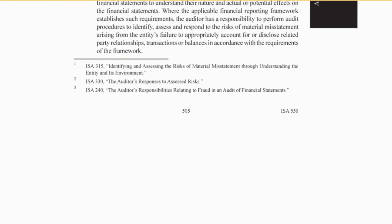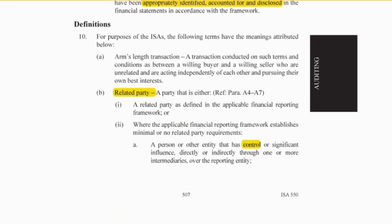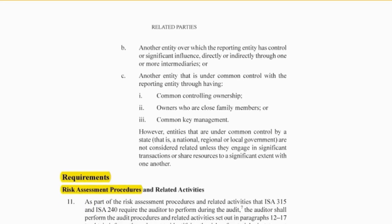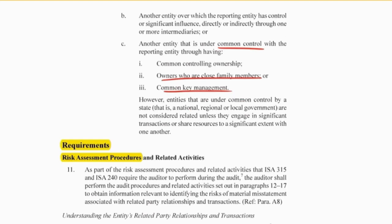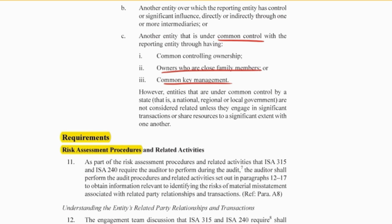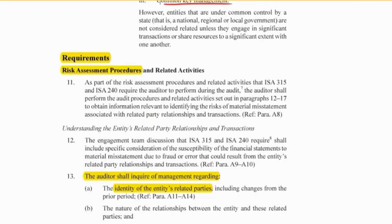Moving down, I want you to look at the actual definition of related parties in this auditing standard. It says where there is control or significant influence over a reporting entity, or they are under common control, common key management, or close family members, or common controlling ownership. So everything we've already noted from IFRS with regards to what could be considered related is addressed here, in addition.